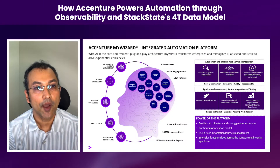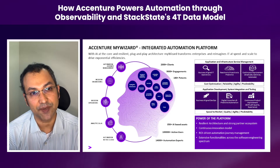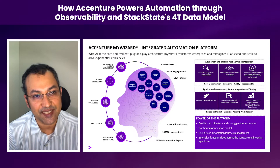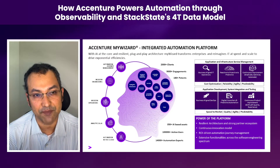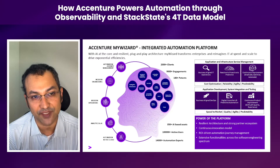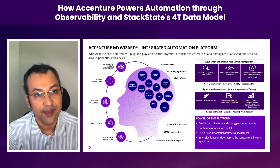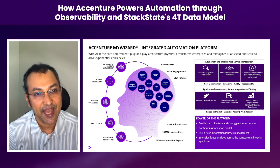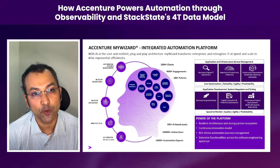At Accenture we provide systems integration, application, and infrastructure management services to over 2,000 clients, and intelligent automation is an essential part of how we provide our services. That's where My Wizard comes in. My Wizard is the automation platform we use at Accenture for all of the services we provide. When I talk about automation it's in a holistic sense — this is about how we bring in a combination of analytics, AI, scripted automation, bots, etc., to improve efficiency overall.